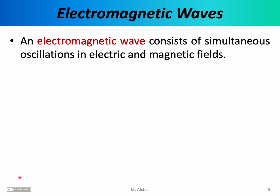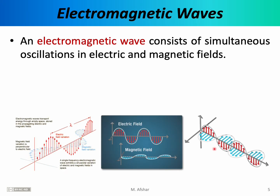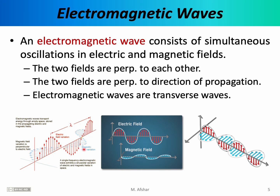For better understanding, it helps to have a visual representation of electromagnetic waves. An electromagnetic wave consists of simultaneous oscillations in the electric and magnetic fields, so one has to keep track of two things. In the picture on the left, you see two sets of arrows: the red vectors represent the electric field, oscillating in magnitude, while the blue arrows represent the magnetic field, also simultaneously oscillating. The electric and magnetic fields are perpendicular to each other, and both are perpendicular to the direction of propagation. For example, if the wave propagates in the z direction, the fields point in the x and y directions.